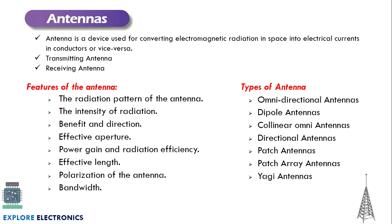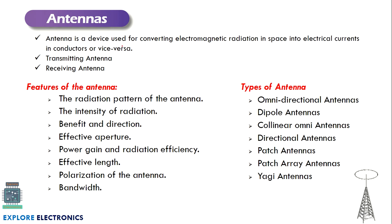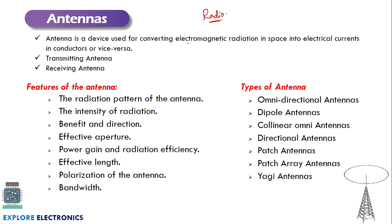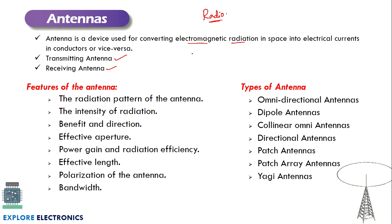Next are antennas. An antenna is a device that converts electromagnetic radiation in space into electrical currents, and electrical current into electromagnetic radiation. In wireless transmission we use radio waves that travel through air as electromagnetic radiation. At the transmitter antenna, current signals must be converted into electromagnetic radiation, and at the receiving antenna, electromagnetic radiation is converted back into electrical current.